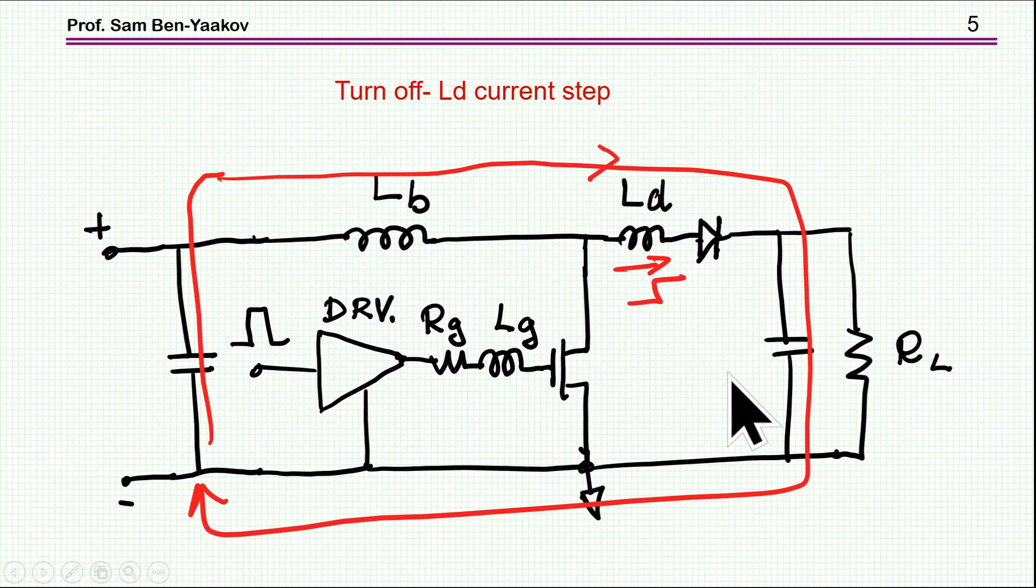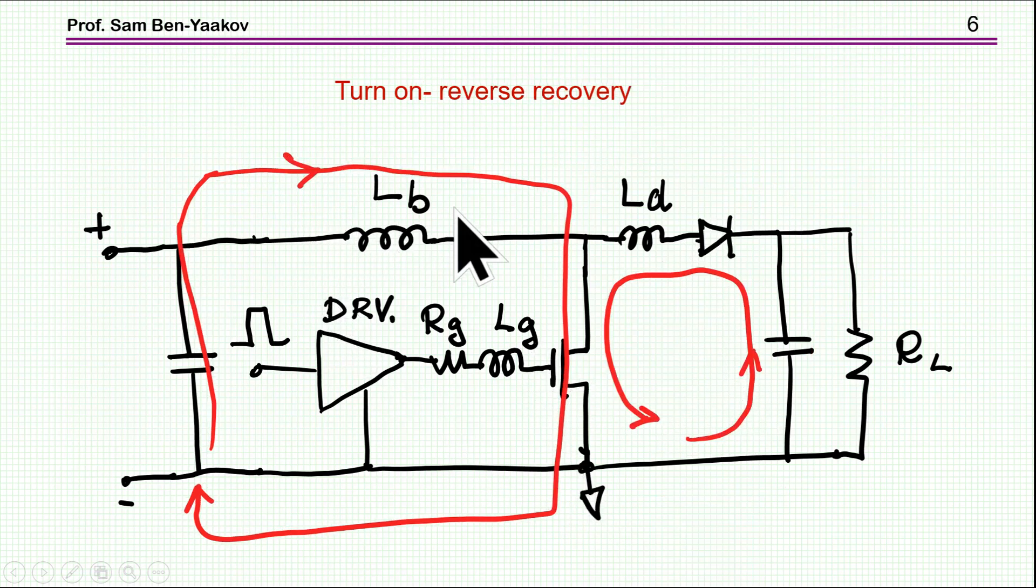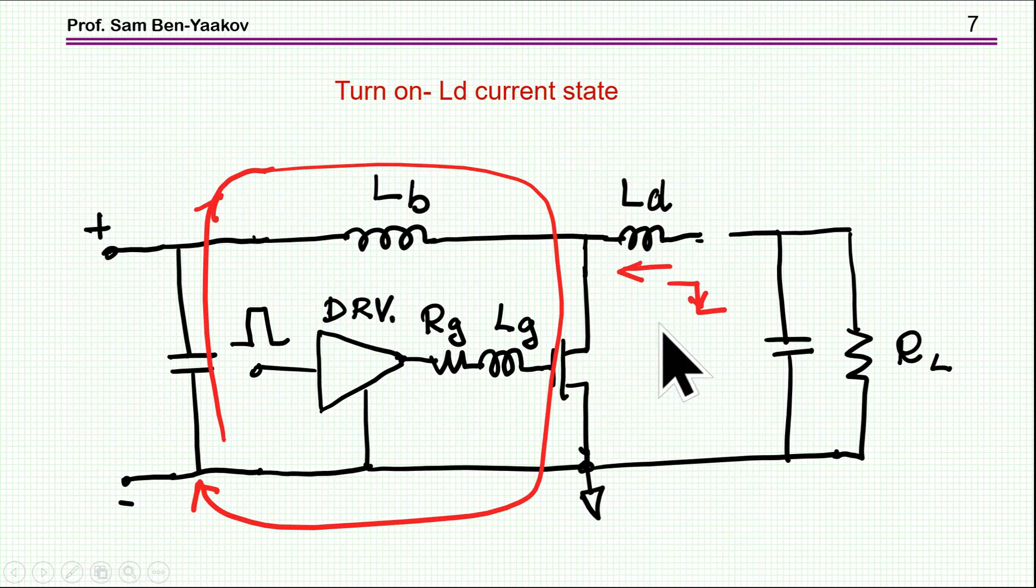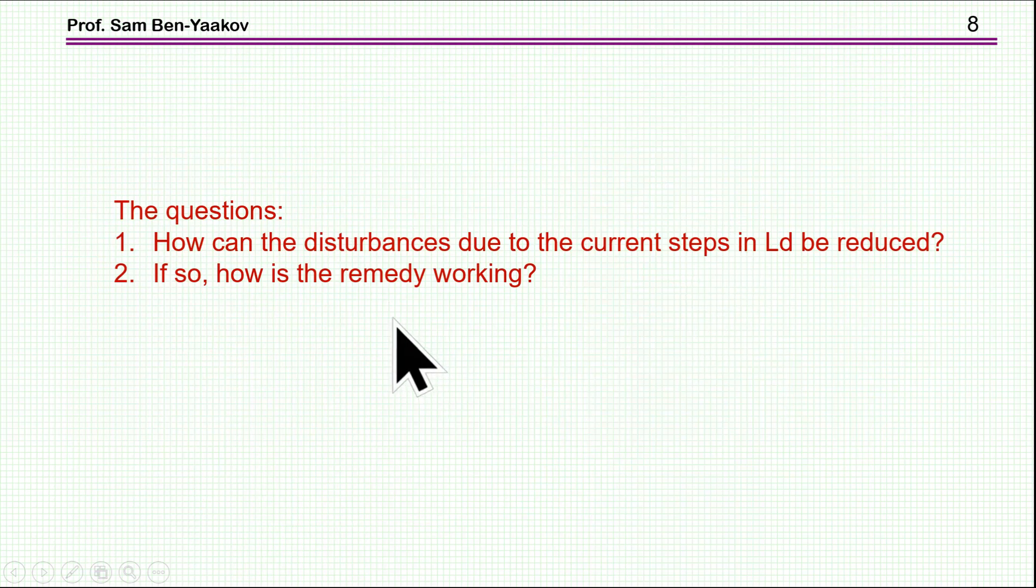And then, when the transistor is turned on, we will have a reverse recovery current for a silicon diode, and then this current stops, and again we have an interruption of the current, causing another voltage here, which again could be harmful to the diode. So, the question of this riddle was, how can the disturbances, due to the current steps in LD, be reduced? And, if so, how is the remedy working? That is, if there is some way to overcoming, what is it really doing?